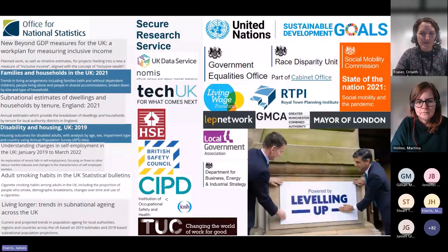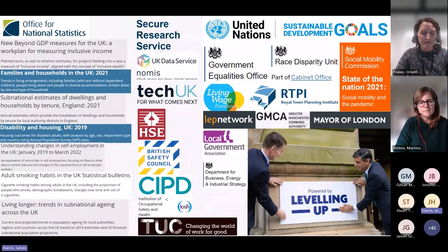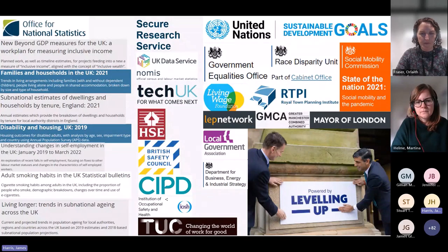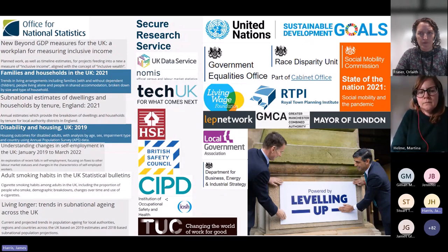Thinking about all the various uses of the data - a whole bunch of publications and statistics make use of our information all across government. You have various outputs by the ONS itself: things like the beyond-GDP measures, breakdowns of families and households, analysis of disability, adult smoking habits, analysis of ageing - all sorts of publications that ONS produces on a regular basis based upon the LFS data. We make our information available through the Secure Research Service, the UK Data Service, NOMIS, and all sorts of other mechanisms for academics, think tanks, and local authorities to access the data.